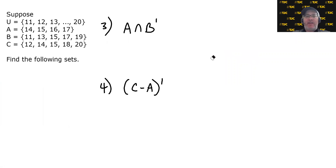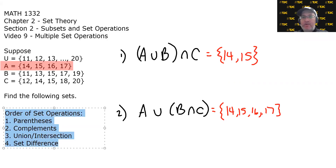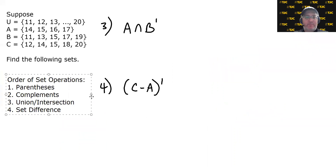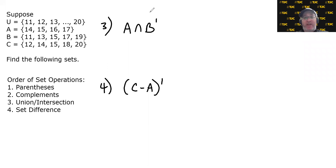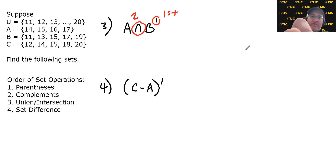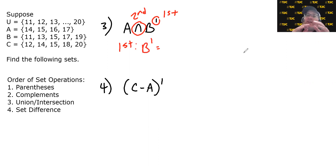For example 3, we have A∩B'. We need to decide the order. There are no parentheses, so we move to complements, which we do have — complement happens first. Then union or intersection, which we have — that happens second. So first, we need to do B complement.